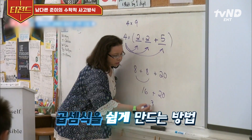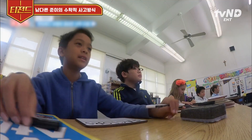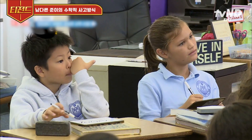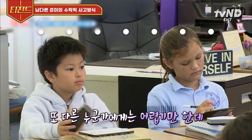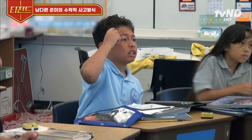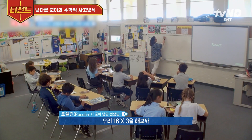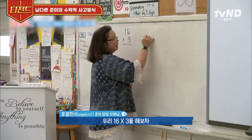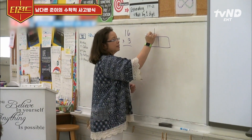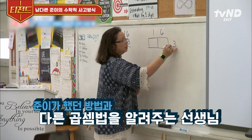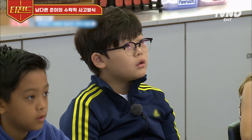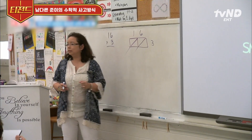And then we have 36, right? Yes, it's simple. Let's try 16 times 3. It's the lattice box, right? I'm going to put a 16 here and a 3 here. I'm going to try to show you again. 6 times 3 is what?